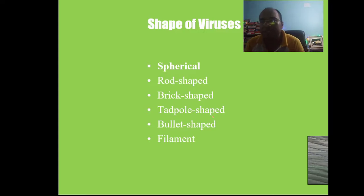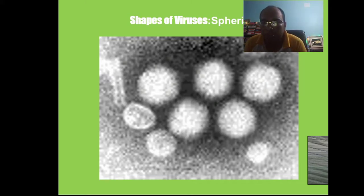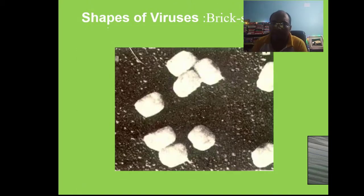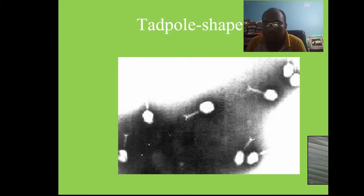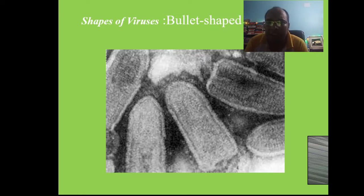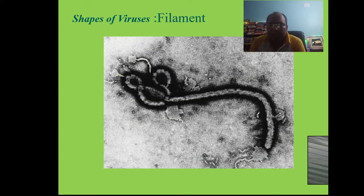The shapes of viruses may be spherical, rod-shaped, brick-shaped, tadpole-shaped, bullet-shaped, or filamentous. You can see the spherical shape, rod-shaped, brick-shaped, and tadpole-shaped viruses in these diagrams. The bullet-shaped virus is rabies virus, also called rhabdovirus, which causes hydrophobia — the disease rabies. Ebola virus is a filamentous virus — you may have heard about the Ebola pandemic.